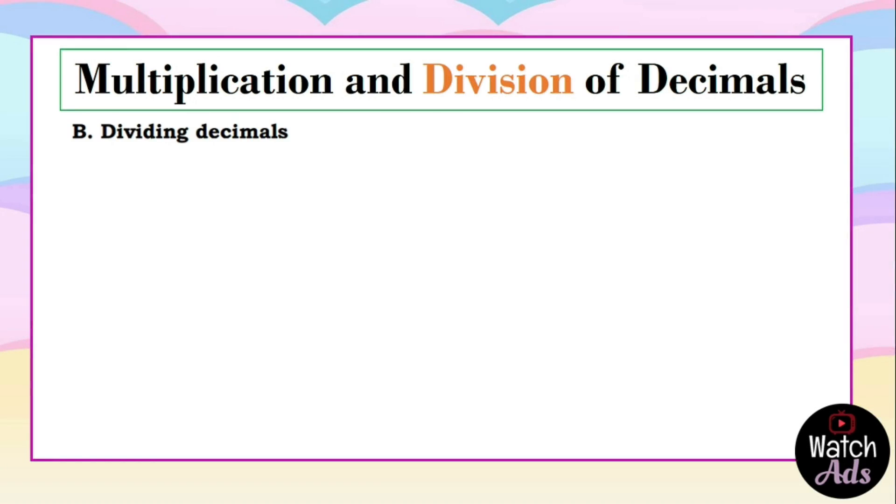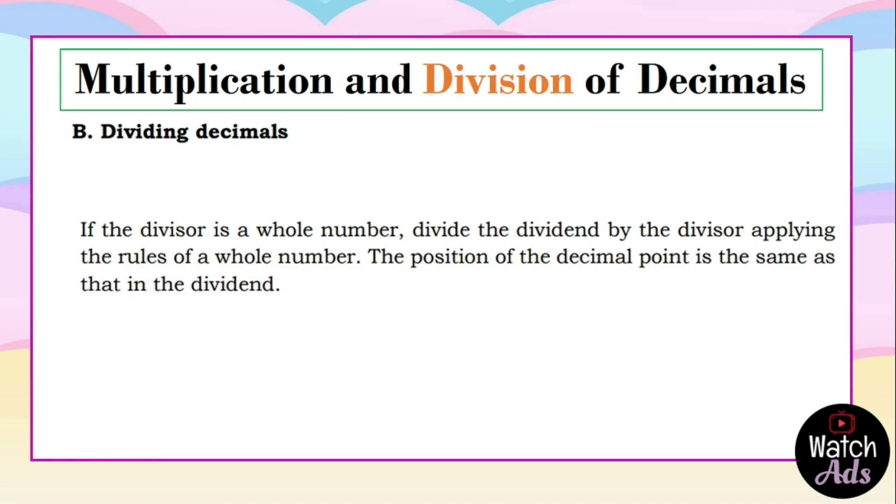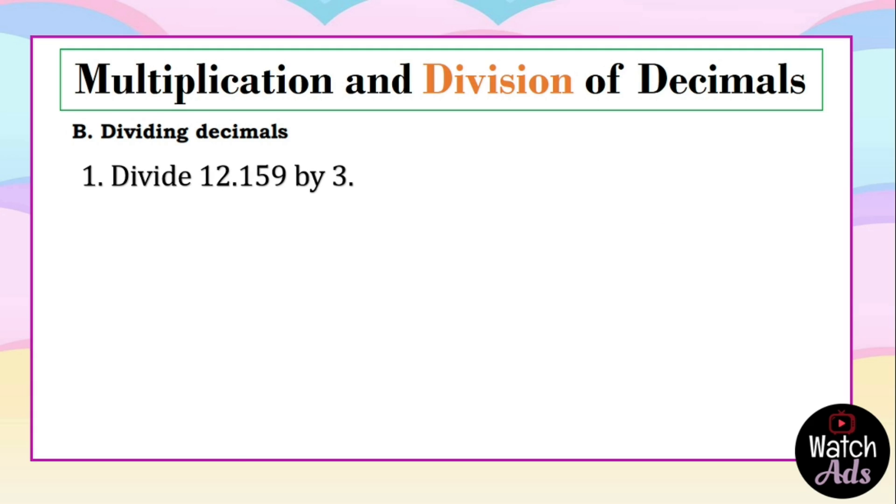Next, for our division of decimals, if the divisor is a whole number, we divide the dividend by the divisor applying the rules of a whole number. The position of the decimal point is the same as that in the dividend.